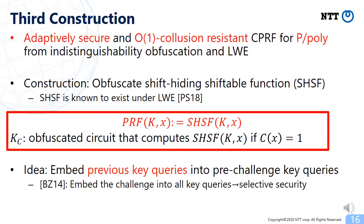Our third construction is adaptively secure and unbounded-collusion-resistant CPRF for P/poly from indistinguishability obfuscation and LWE. The construction is obtained by obfuscating a primitive called shift-hiding shiftable function, constructed based on LWE by Ps̆ikal and Ciechon. Our main idea is to embed previous key queries into pre-challenge key queries, which is very different from the approach of Boneh and Zhandry who constructed selectively secure CPRF from obfuscation by embedding the challenge into all key queries.